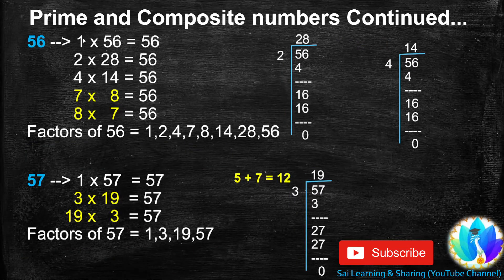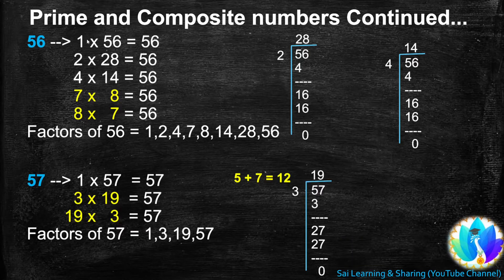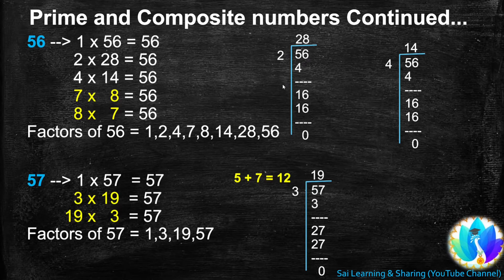Next, 56. 1 is a factor of every number, so 1 times 56 equals 56. 56 is a multiple of 2 because the ones digit is an even number. When we divide 56 by 2, we get quotient 28, so 28 is another factor of 56, and 2 times 28 equals 56.